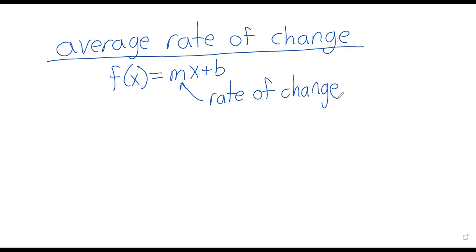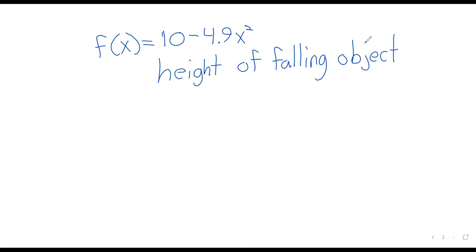Other functions do not have constant rates of change. For example, f of x equals 10 minus 4.9x squared. This function could represent the height of a falling object. You can take a physics course to see why.